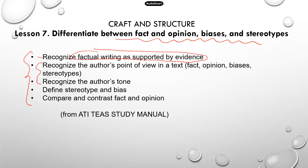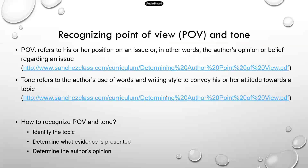The next two learning objectives are very similar and related — recognizing the author's point of view and the author's tone. The tone really depends on the author's point of view. If you can identify the author's point of view on a certain situation or person, then it's going to be very easy to recognize the author's tone. For example, if the author is praising somebody, the tone is going to be very different than if the author is criticizing that person. Point of view refers to the author's position on an issue — really just the author's opinion or belief. And the tone refers to the author's use of words and writing style to convey his or her attitude towards a topic. The tone usually depends on the point of view.